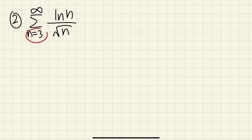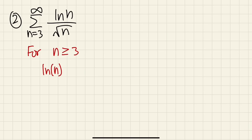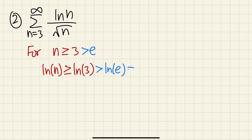Luckily, n starts at 3. So for n ≥ 3, since ln is an increasing function, if I take the natural log on both sides the inequality stays the same. The key fact is that 3 is bigger than e, so ln(3) > ln(e) = 1. Therefore, when n ≥ 3, ln(n) > 1. So we go back to our expression and replace ln(n) with 1, using the inequality.